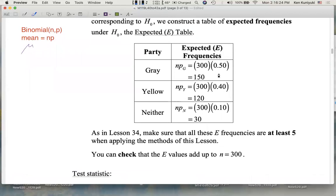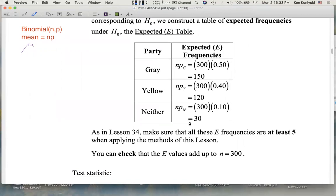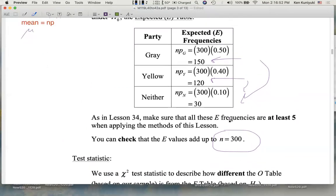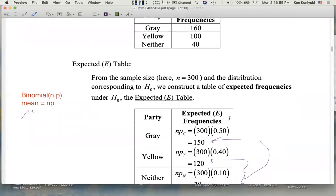As in lesson 34, we have to make sure that these values are at least five. Bear in mind, I'm not going to trick you like that on homework or tests. And as a check, you can make sure that these add up to n, which is 300. At this point, we have an O table and an E table.